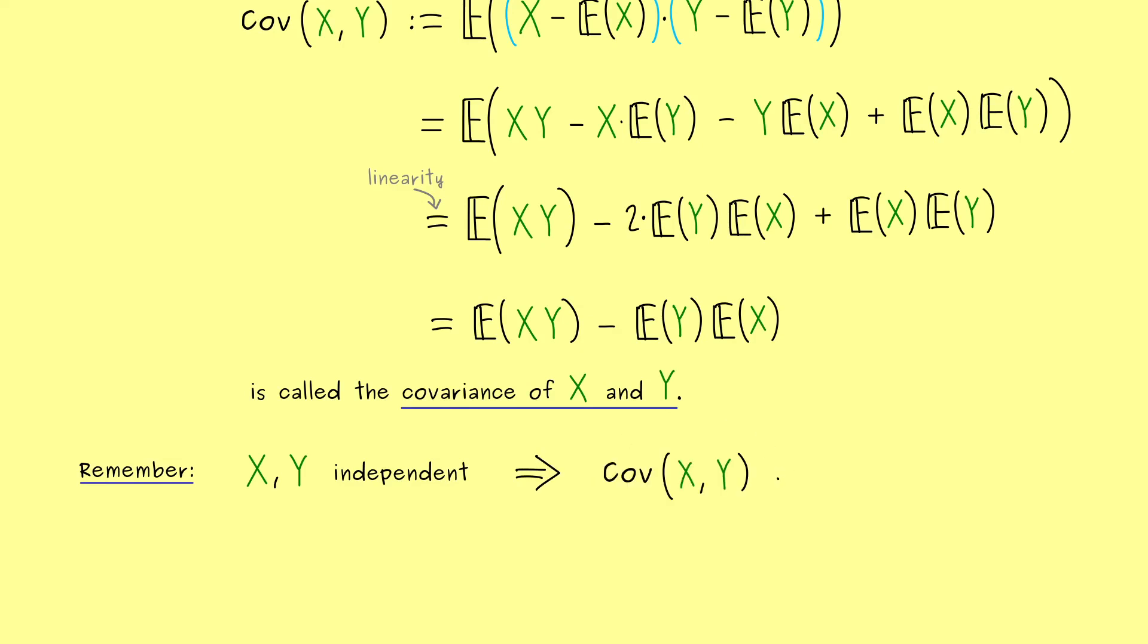Conversely, if the covariance is very far away from zero, then the two random variables are also far away from being independent. However, heads up, the converse implication here is in general false. It's only correct in some special situations.